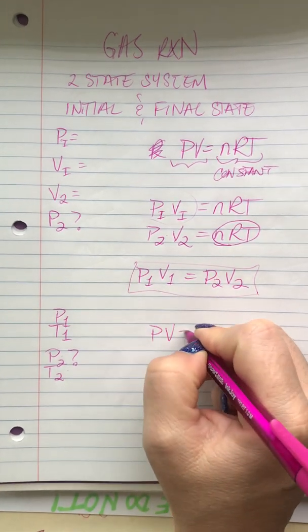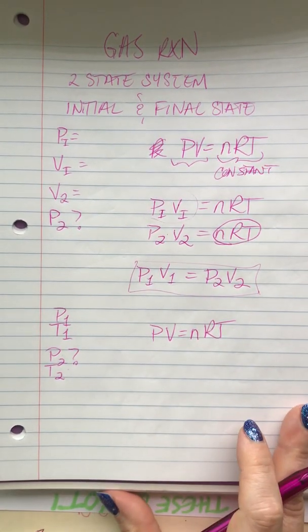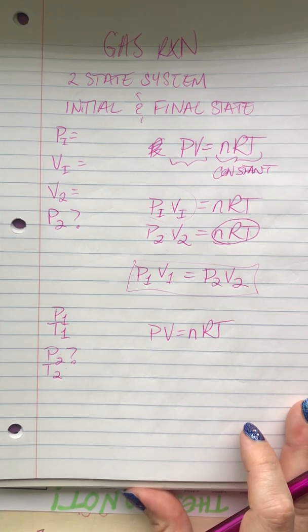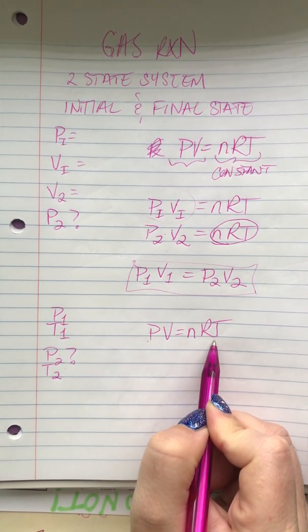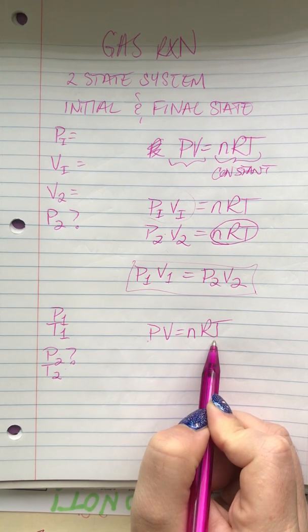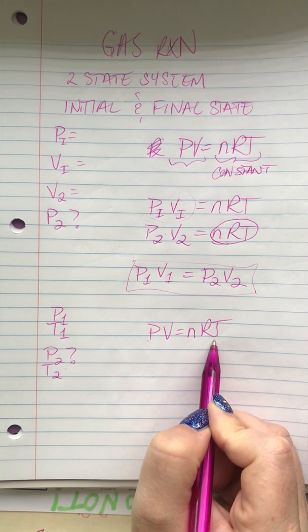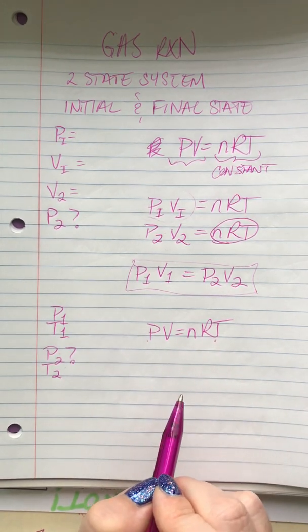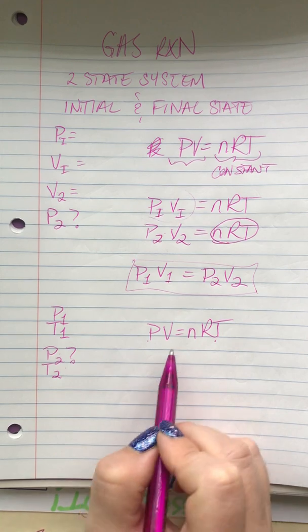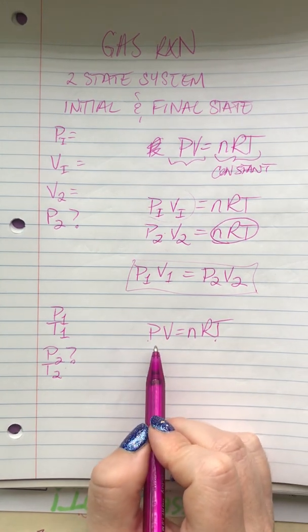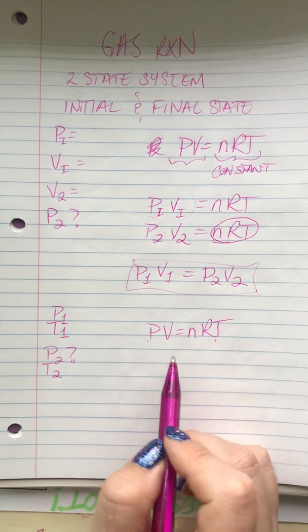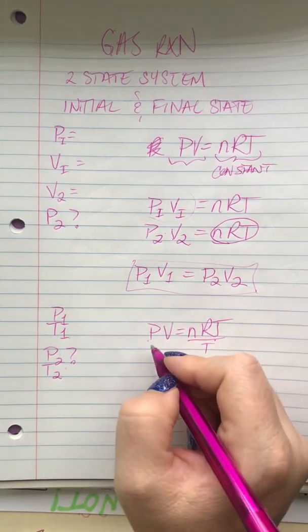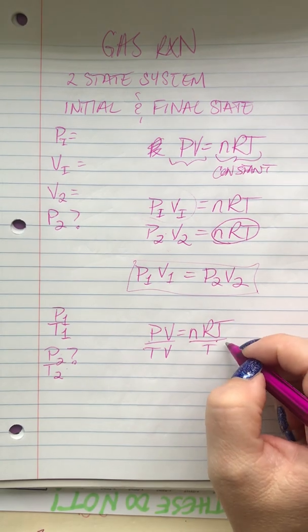Now we'd start off with our PV equals nRT. So if we know that pressure and temperature are the only things that are changing, we want to get those on one side of the equation. So how do I get pressure and temperature together? Let's say we put them on this side, just for fun. I'd divide out temperature from the right and put it on the left, and then divide out volume from the left and put it on the right. Exactly.